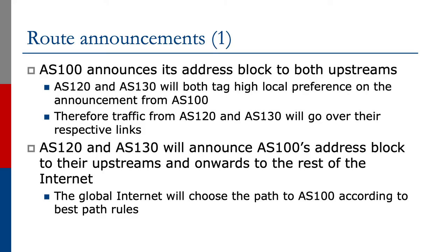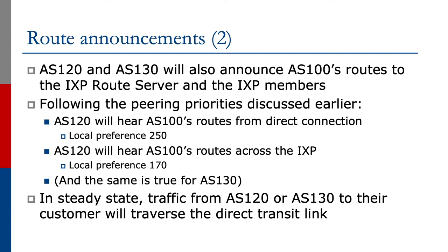Let's look at the route announcements first. AS100 would announce its address block to both upstreams. AS120 and AS130 will both tag high local preference on the announcement they receive from AS100, and therefore traffic from AS120 and AS130 respectively will go over the respective direct links. AS120 and AS130 will announce AS100's address block onwards to their upstreams and to the rest of the Internet, and the global Internet will choose the path to AS100 according to best path rules. AS120 and AS130 will also announce AS100's routes to the Exchange Point's route server and to the IXP members they peer with, following the peering priorities discussed earlier.